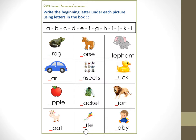The first one: frog — frog starts with F. Horse — horse starts with H, H. Elephant — elephant. Car — C, K, K. Insects — I, I, I.